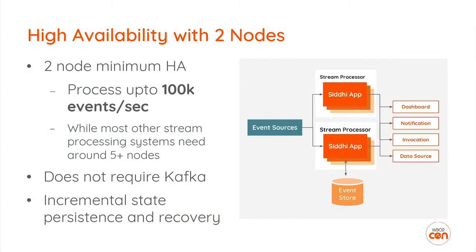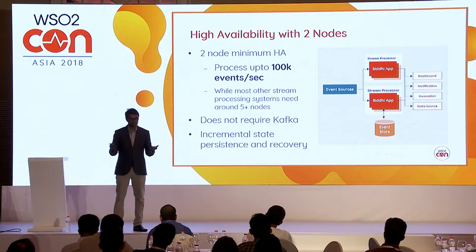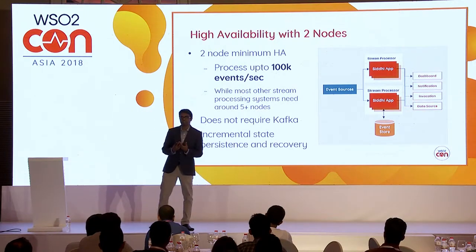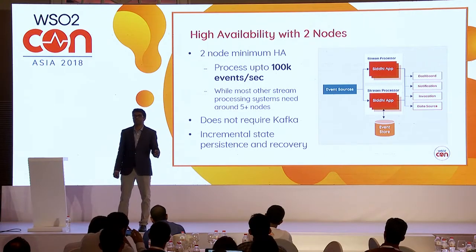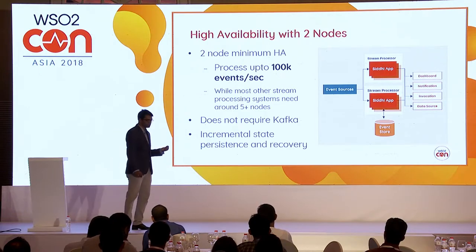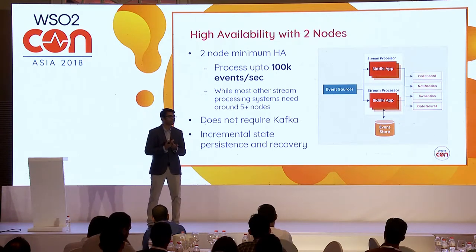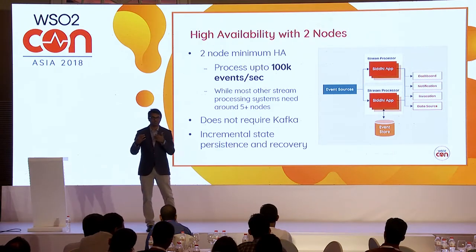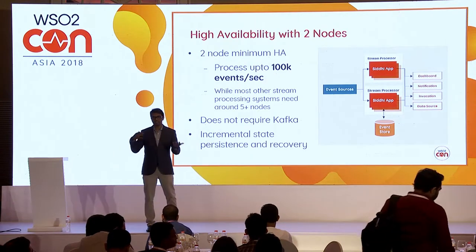As for deployment: systems like Flink and Storm need about five to six nodes to run. For Kafka to be scalable, it needs at least three nodes, and each node needs another three for high availability and scalability. WSO2's stream processor can process about three million events per second when embedded, or up to 100k events per second via network call — this is without database interactions. With database interactions, performance depends on the database.